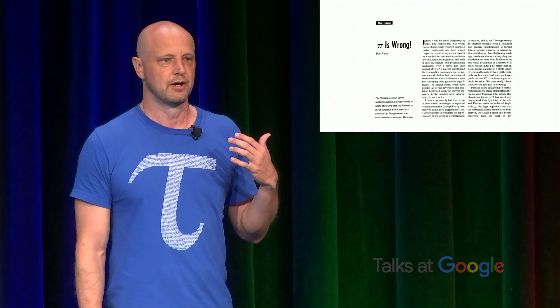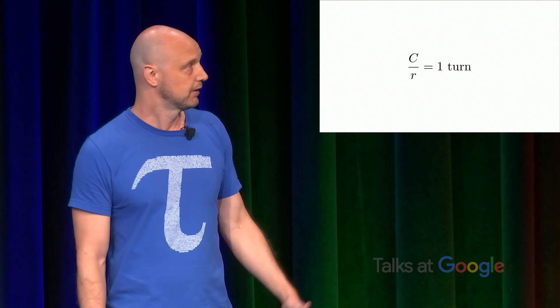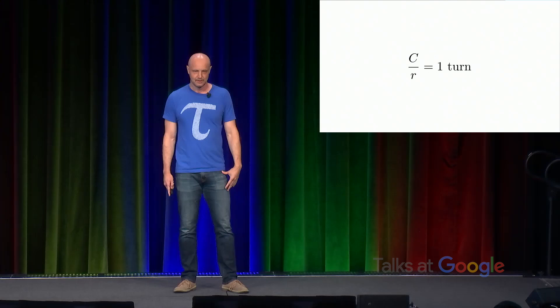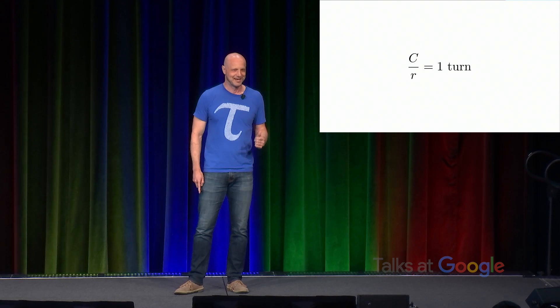And Pi is Wrong introduces this idea of C over R being one turn, because, as we'll see, it represents one turn of a circle. And so at this point, I'd like to acknowledge that Bob is actually here in the audience. He came out for this talk and to meet me and other Tau enthusiasts. So if we could give him just a brief round of applause for his work in starting this thing.